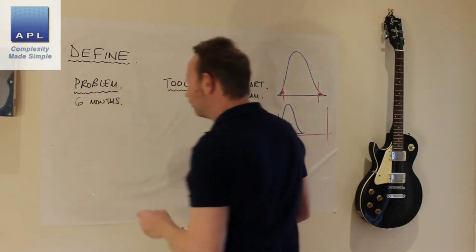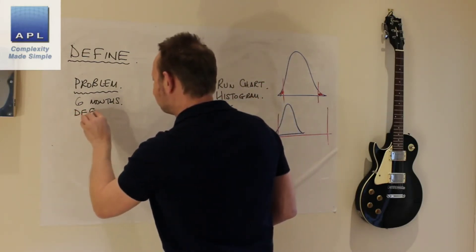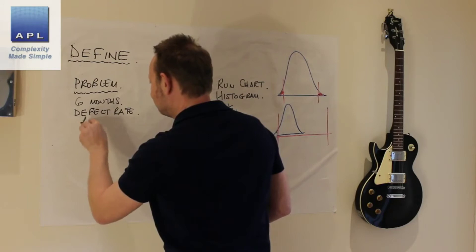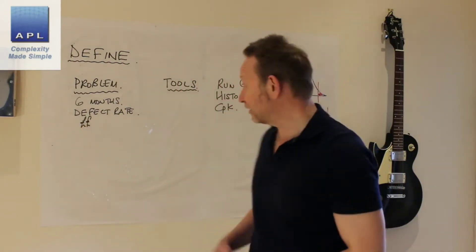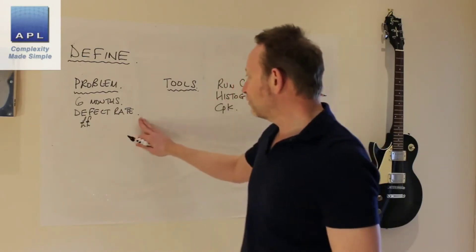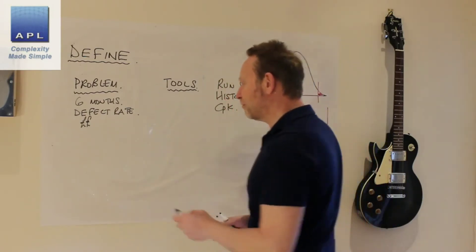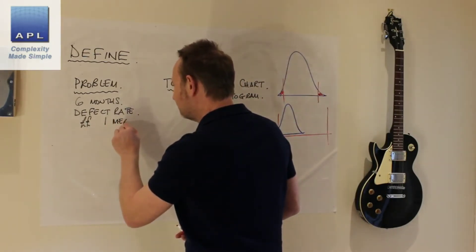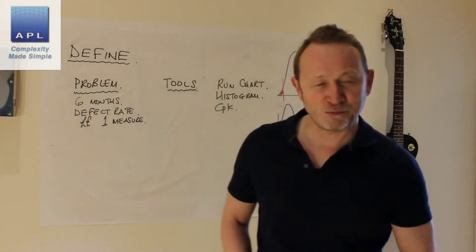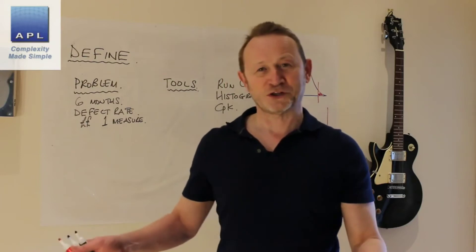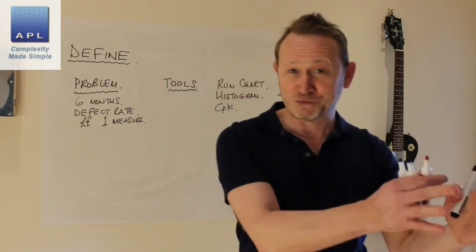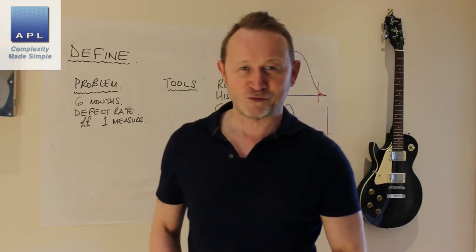To define your problem well, look at about six months worth of data if you've got it. You want to quantify it — defect rate — and say how much money it is currently costing you. Use a run chart and Cpk. The other important thing about defining the problem is to have one measure. Sometimes people say they've got an OEE problem, a defect rate problem, and an on-time delivery problem. Pick one — whether it's OEE, defect rate, or on-time delivery — and keep it clear and simple.